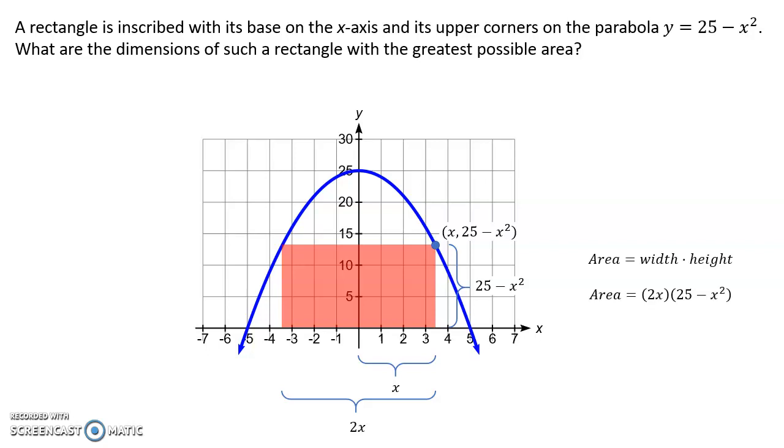So we can put those together now. The area of this rectangle would be width times height, the width is 2x, and the height is 25 minus x squared. And we could simplify that by distributing the 2x to get 50x minus 2x cubed.